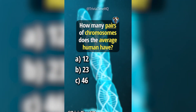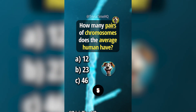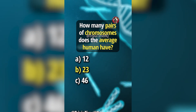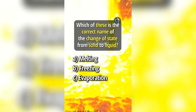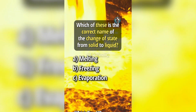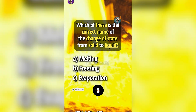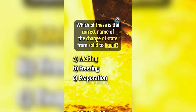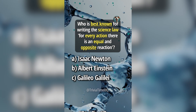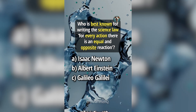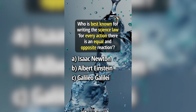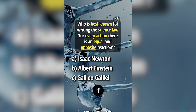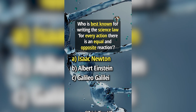How many pairs of chromosomes does the average human have? Answer B, 23. Which of these is the correct name of the change of state from solid to liquid? Answer A, melting. Who is best known for writing the science law: 'For every action, there is an equal and opposite reaction'? Answer A, Isaac Newton.